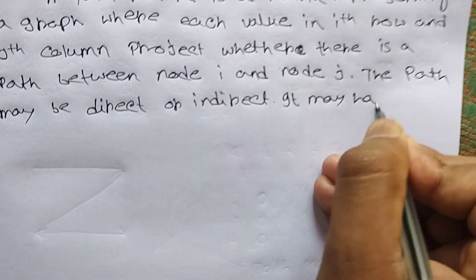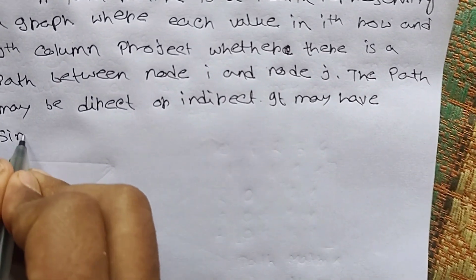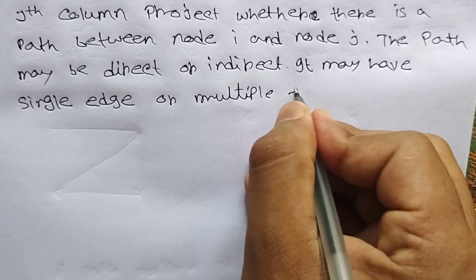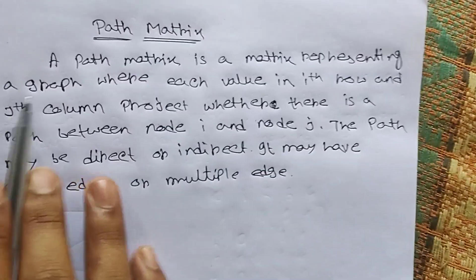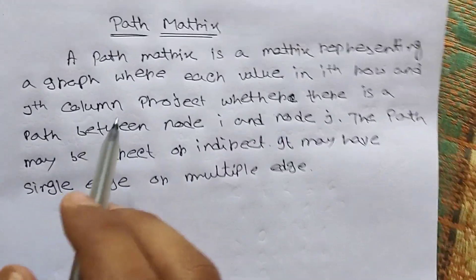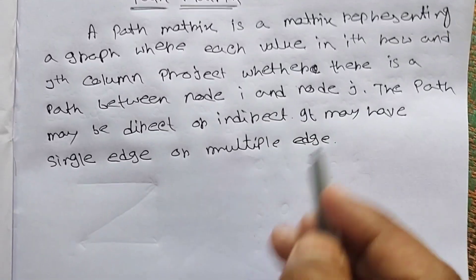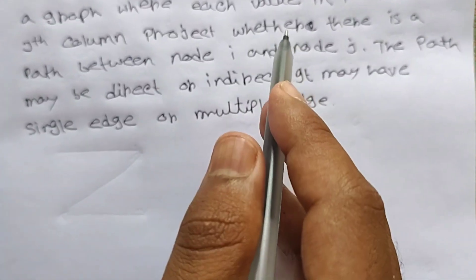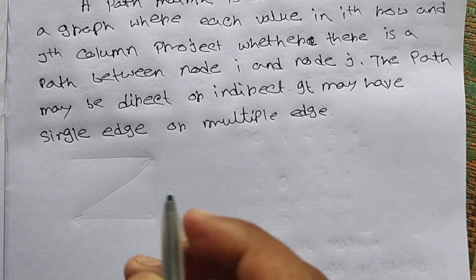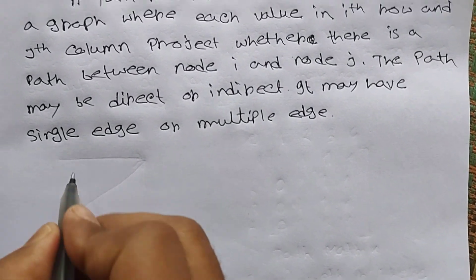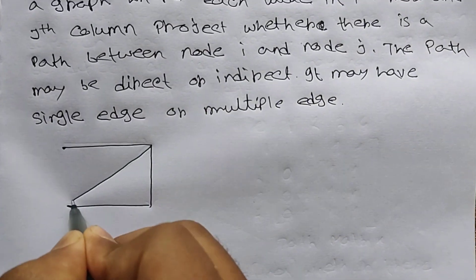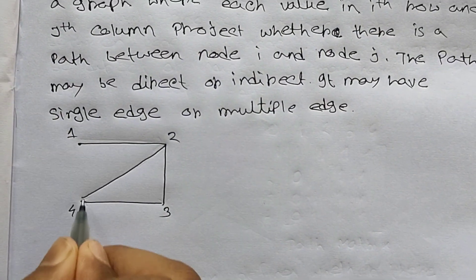The path may have a single edge or multiple edges. So a path matrix is a matrix representing a graph where each value in the i-th row and j-th column indicates whether there is a path between node i and j. Here i represents the row and j represents the column.